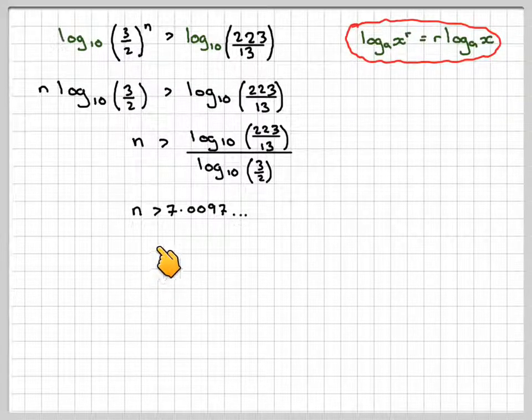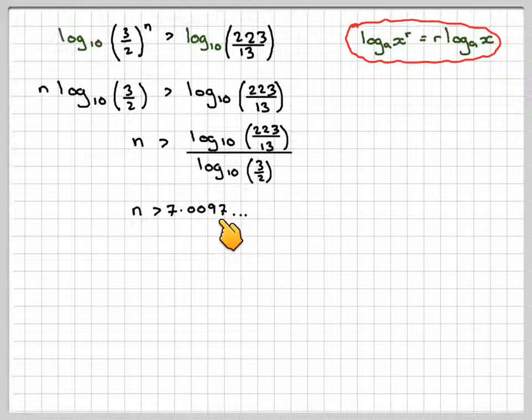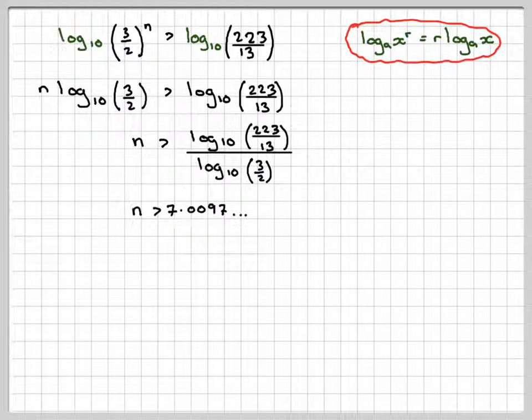So n, if you work this out on your calculator, n is greater than 7.0097. Now, we can't put down 7. We will actually have to go up to the next whole term, which is 8.